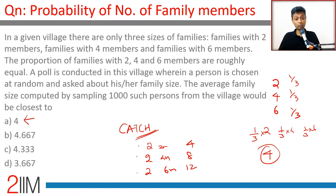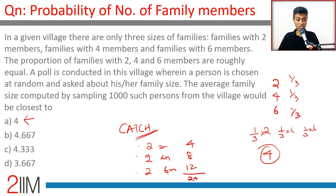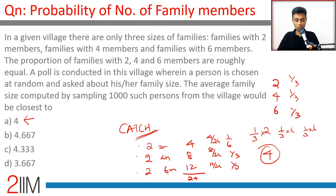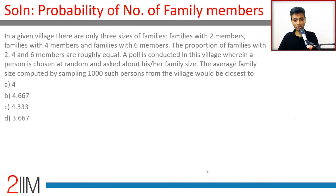We have to account for the likelihood that the person is from a six-member family. With two of each family type, there are four, eight, and twelve people respectively, totaling 24. So the probability of picking someone from a two-member family is 4/24 = 1/6; from a four-member family, 8/24 = 1/3; and from a six-member family, 12/24 = 1/2.